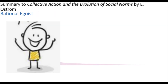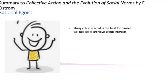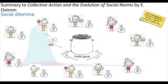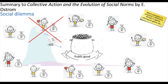The first type is the rational egoist. The rational egoist will always choose what is best for himself and will not act to achieve group interest. Looking back to the game, the rational egoist will never spend any money toward the public good, because if he contributes 10 units he will only get 5 units back — which is obviously a very bad decision for him.